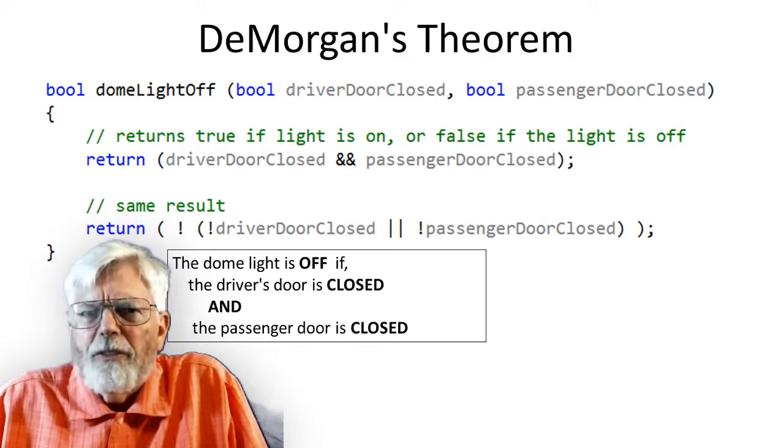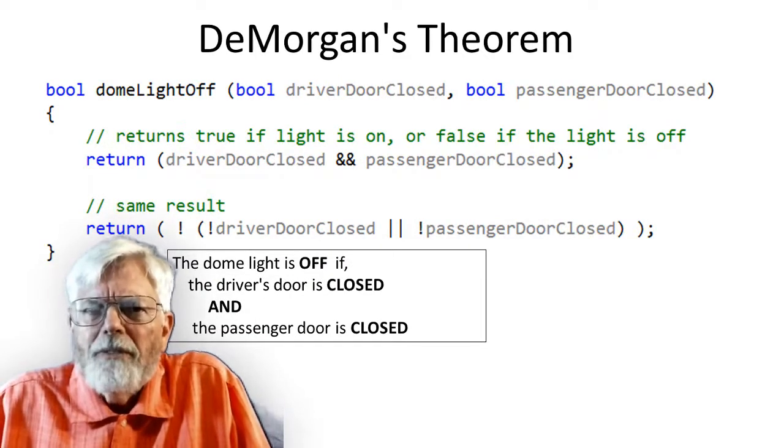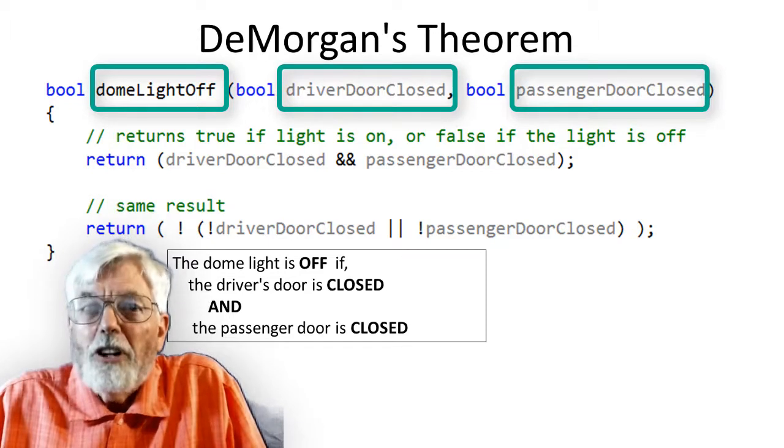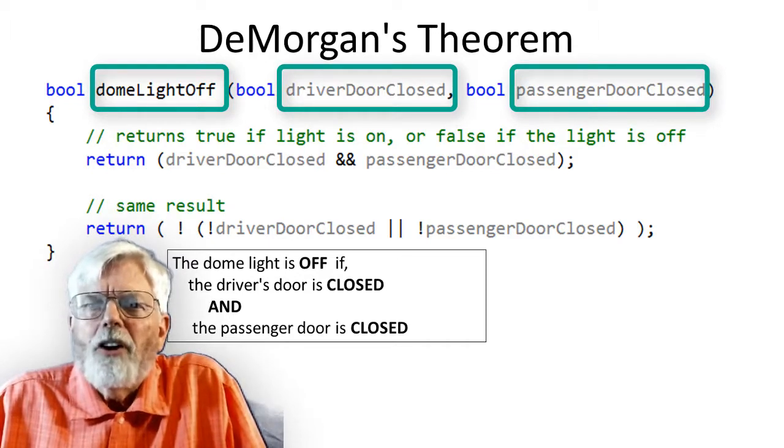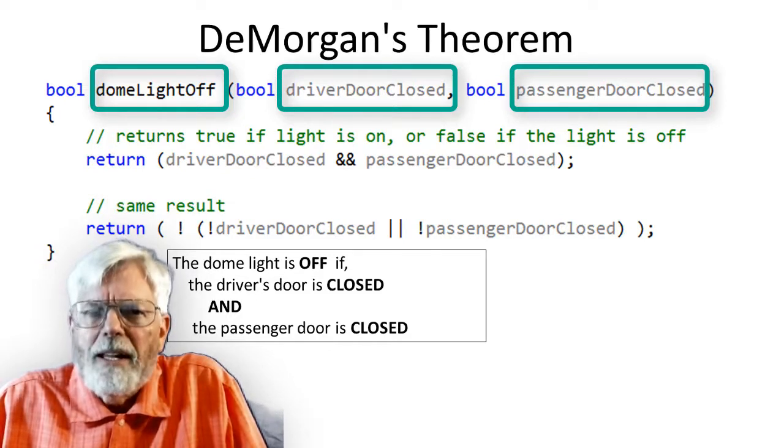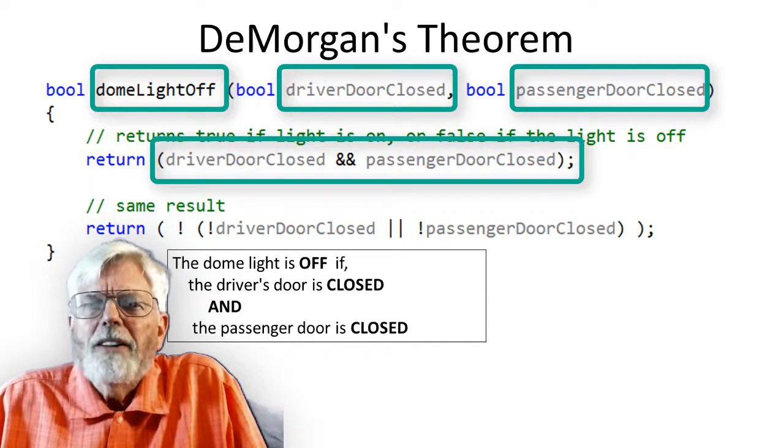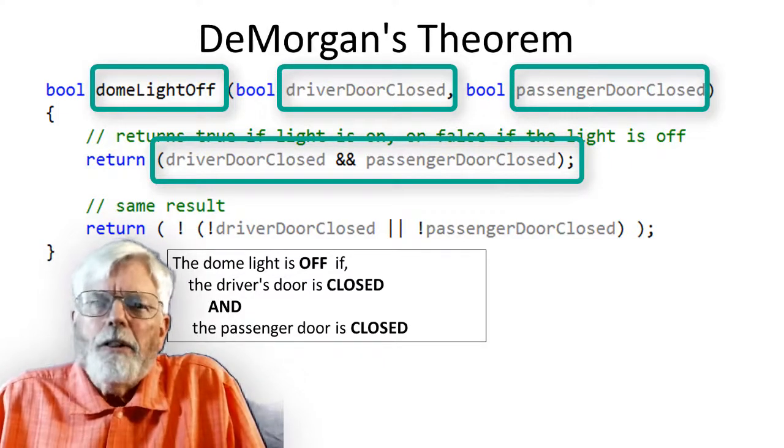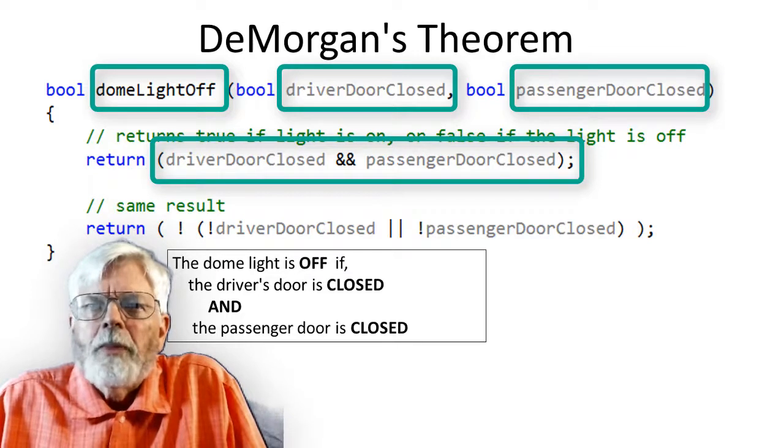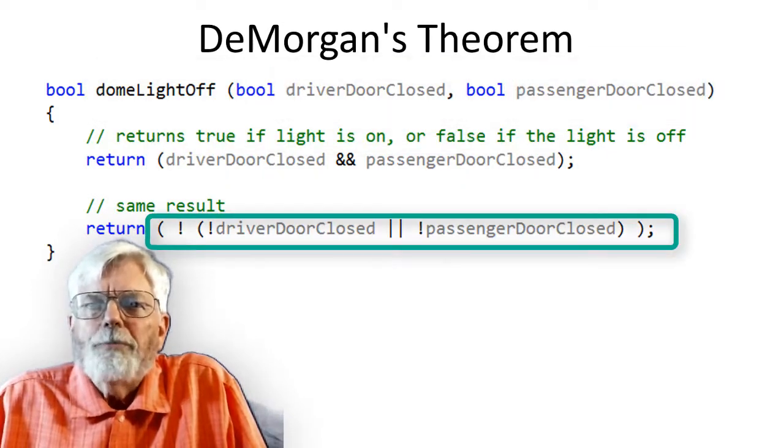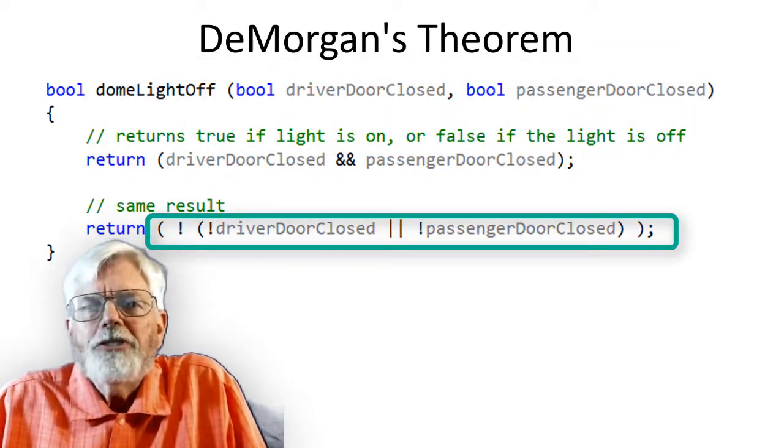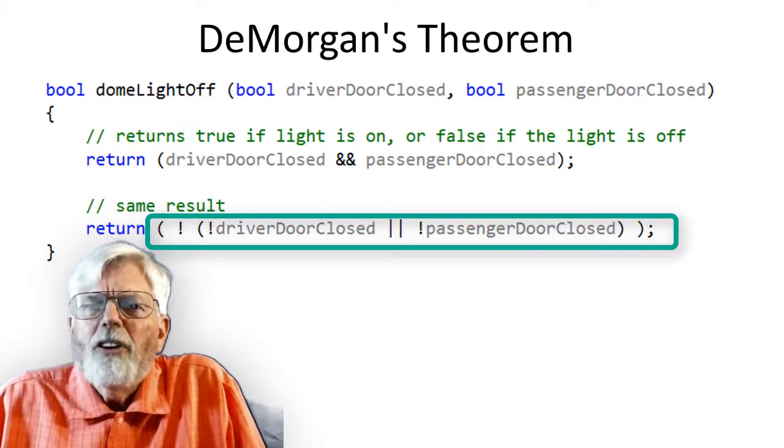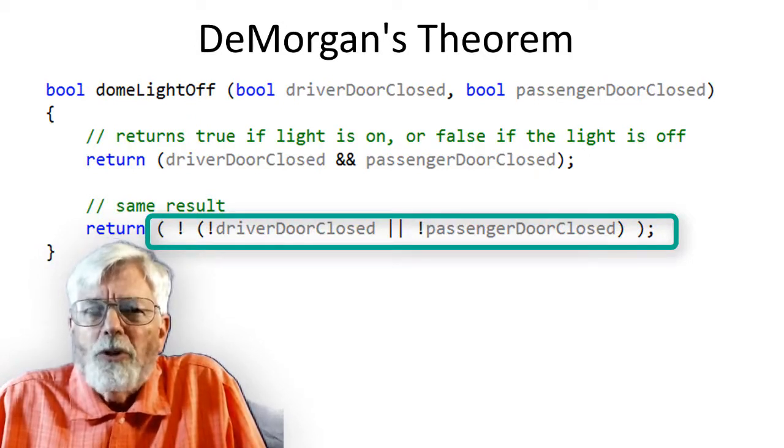Here is a slightly different version that returns true if the light is off. Changing the name of the function to dome light off does not do anything, but it helps identify what will be happening inside. The dome light is off if both the driver door is closed and the passenger door is closed. The second return statement has been demorganized and returns the same result. You might look that one over to see what is going on, but I am not going to describe it here.